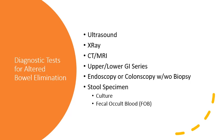A fecal occult blood test is performed at the bedside. With a gloved hand and a small amount of lubricant, the nurse inserts a finger into the rectum and retrieves a small amount of stool, which is then wiped onto a test paper. Drops of developer solution are applied, and the paper turns blue if blood is present — a blue result is a positive result.